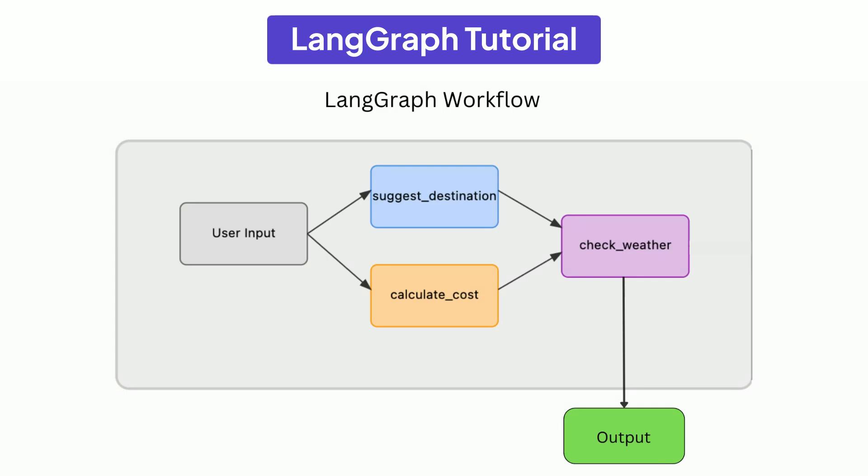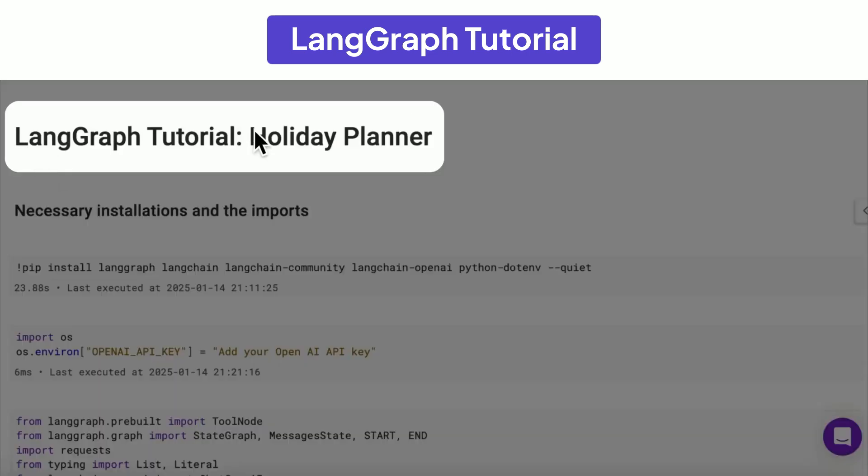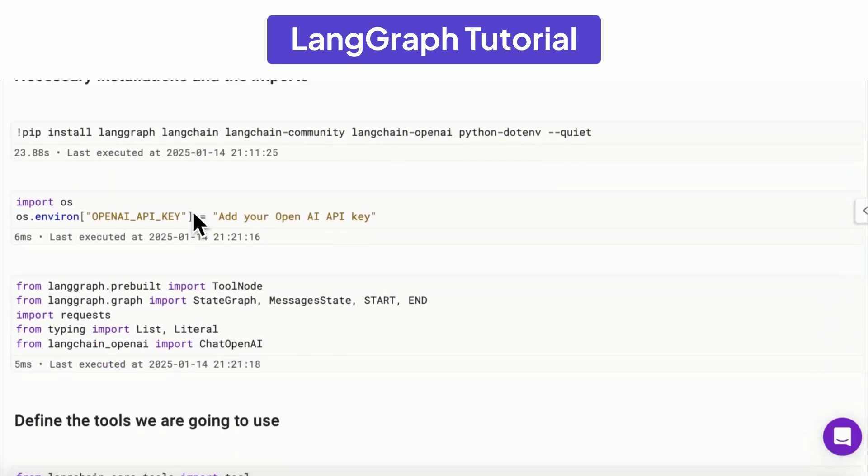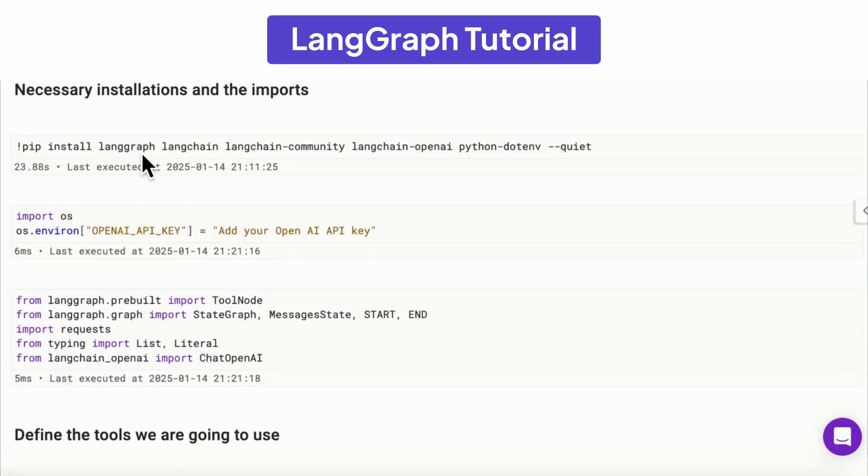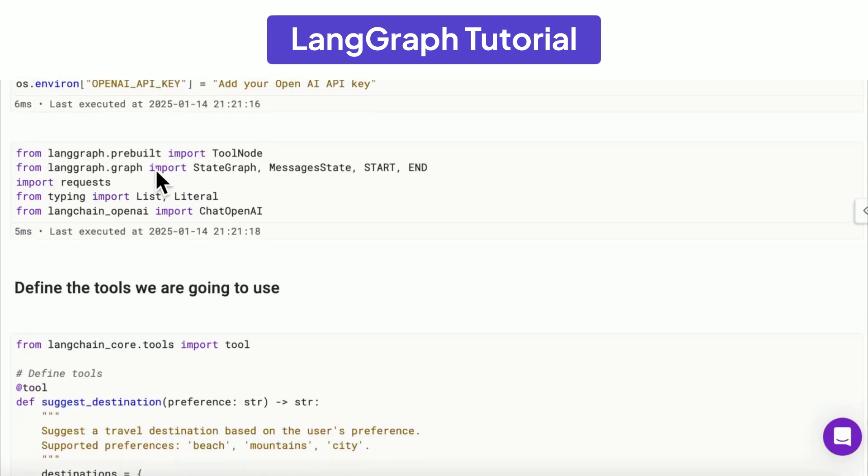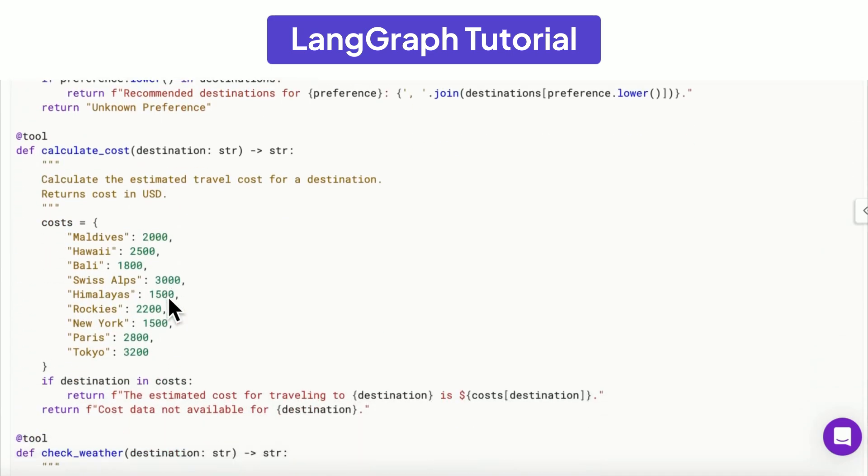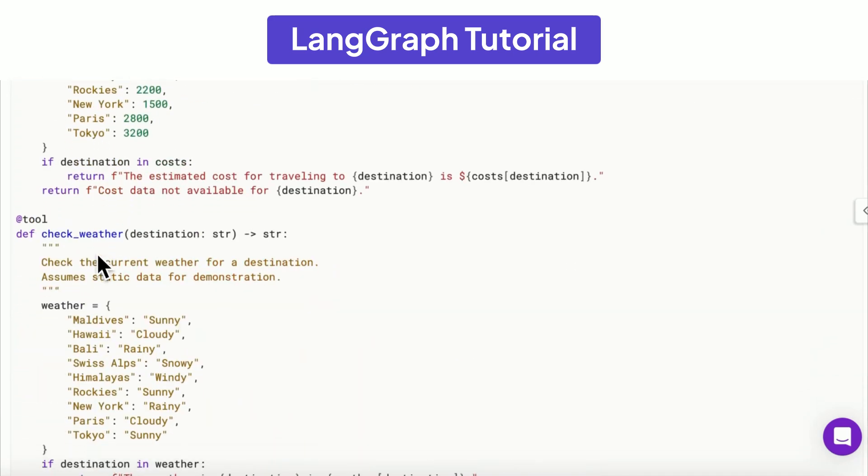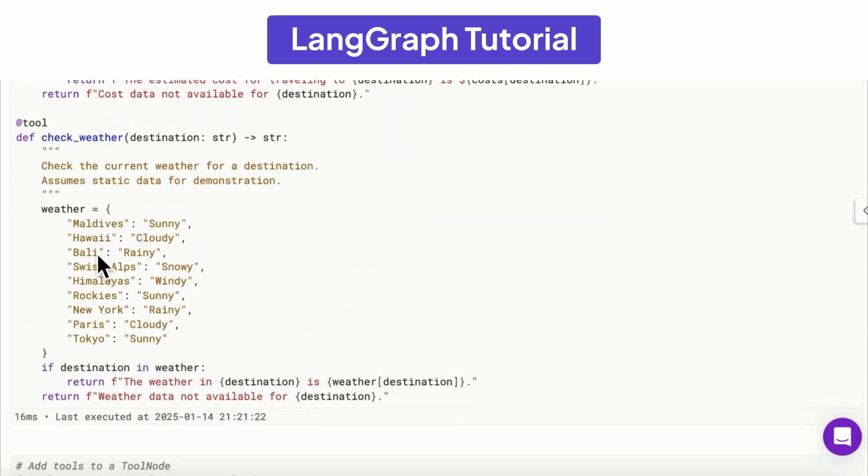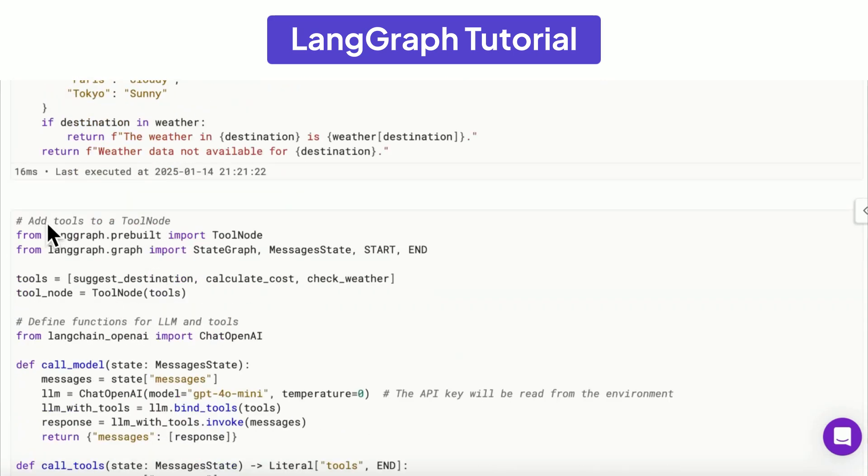So here is the simple tutorial, the holiday planner. We will first install all the required installations and import them. We will also add OpenAI API key. Then we define the tools that we want. We will also say the destinations, the type of destination, the cost involved. We will also check the weather and add the weather. And then we will also add the tools to the tool node.